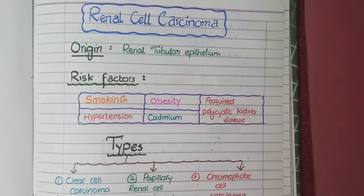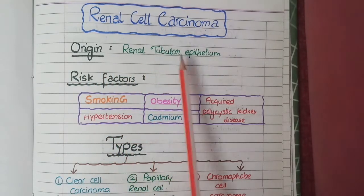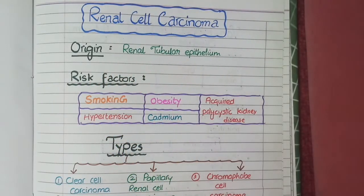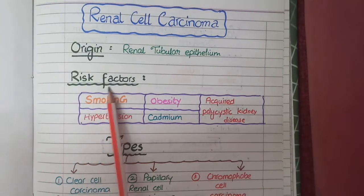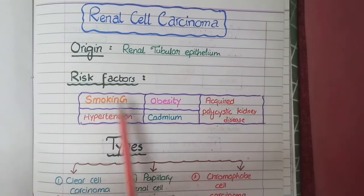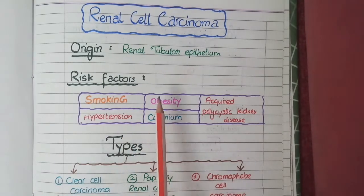The origin of renal cell carcinoma is from renal tubular epithelium, as implied by the name renal cell carcinoma. The risk factors for renal cell carcinoma are smoking and obesity. You know that these two factors are commonly the risk factors of many types of cancers.